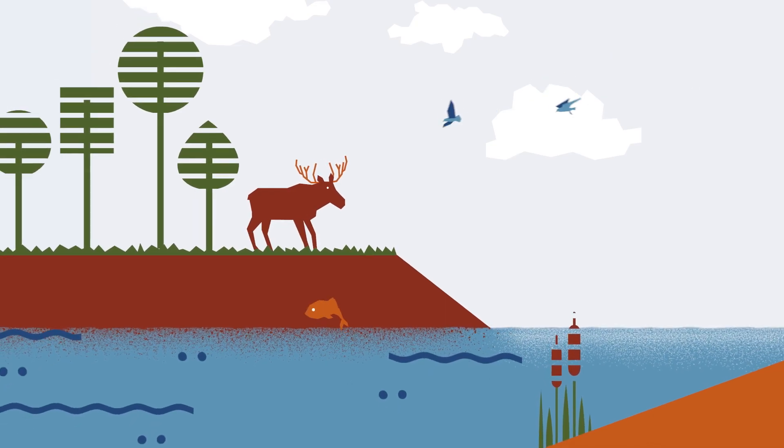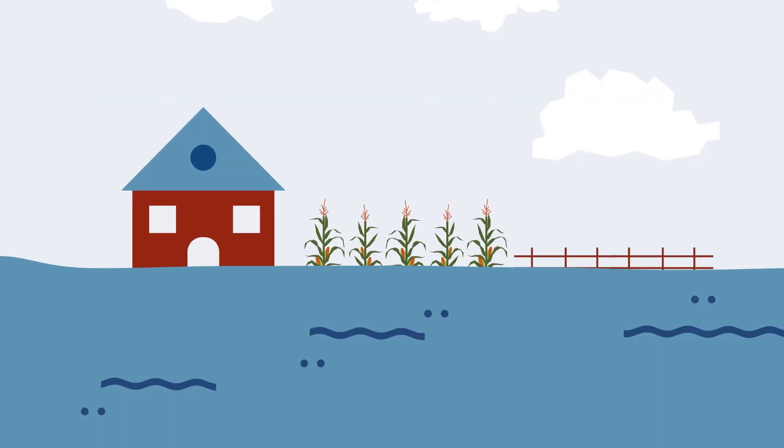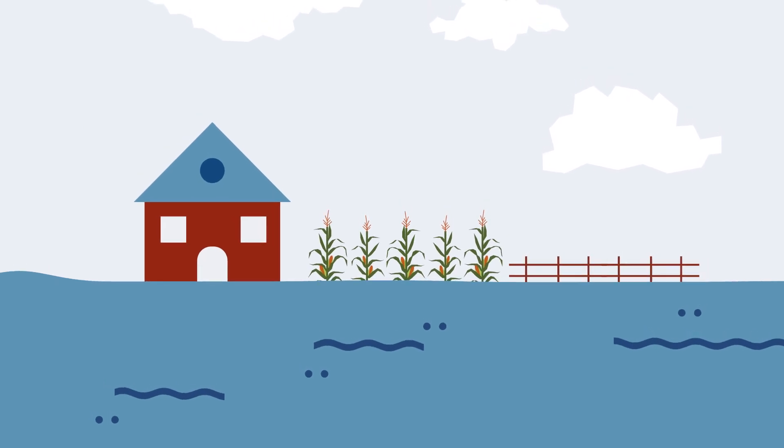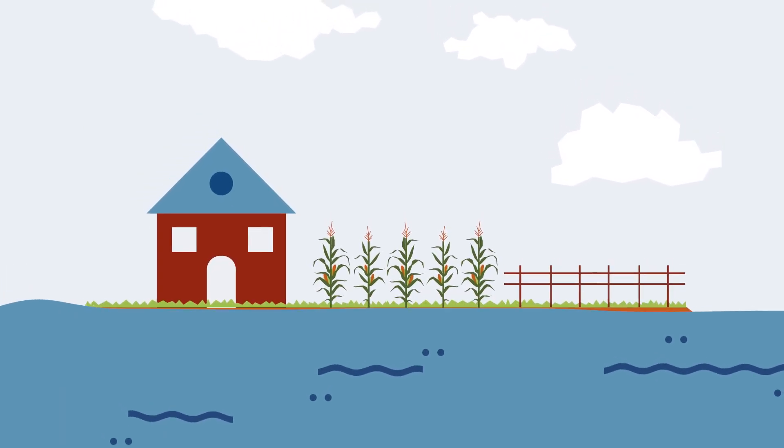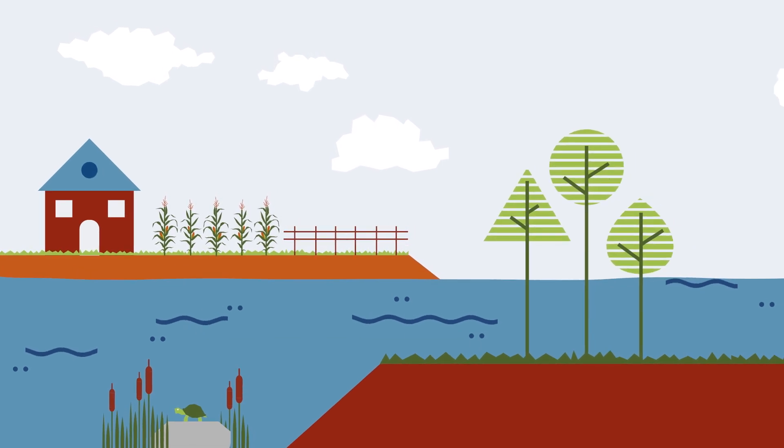Wetlands and floodplains soak up floodwaters and limit property damage caused by floods. Grasslands and forests stabilize our soils and limit impacts caused by heavy rains.